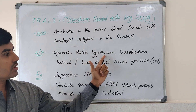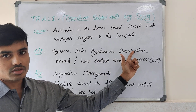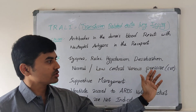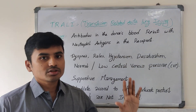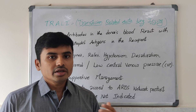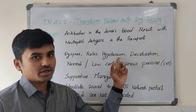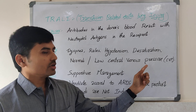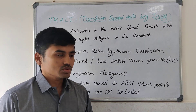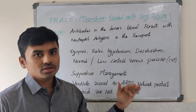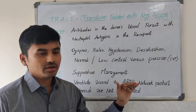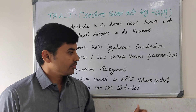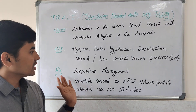There is a fall in BP, desaturation (fall in oxygen saturation), and normal or low central venous pressure. This is the key difference from TACO: in TACO there is hypertension and raised CVP, whereas in TRALI there is hypotension and normal or low CVP.